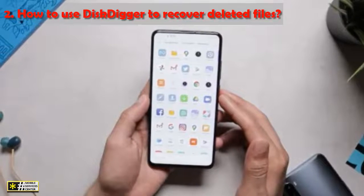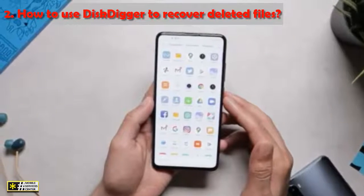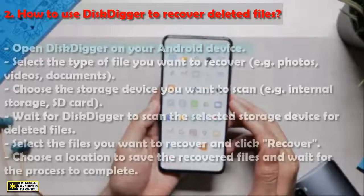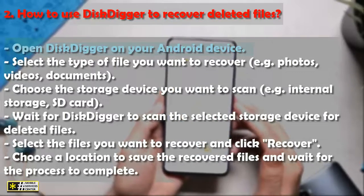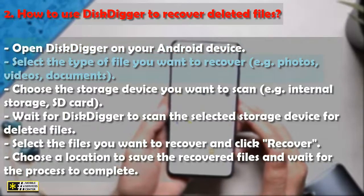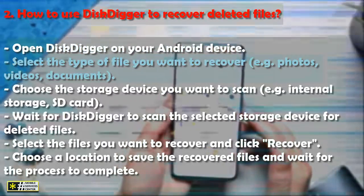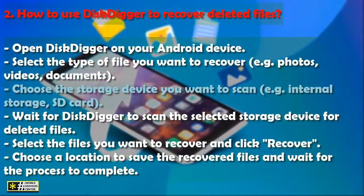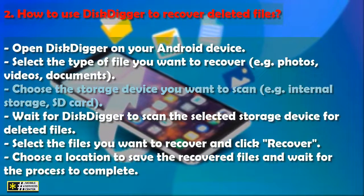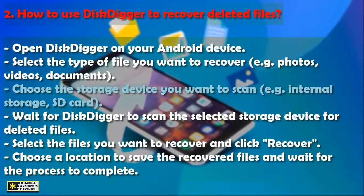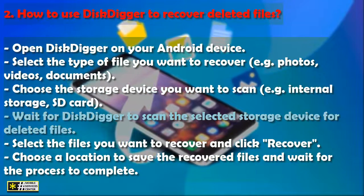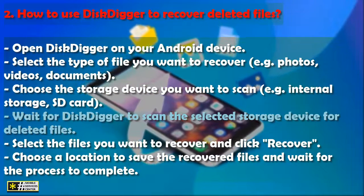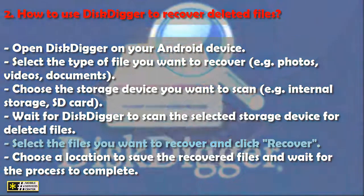Number two: how to use DiskDigger to recover deleted files. Open DiskDigger on your Android device. Select the type of file you want to recover, e.g. photos, videos, or documents. Choose the storage device you want to scan, e.g. internal storage or SD card. Wait for DiskDigger to scan the selected storage device for deleted files.